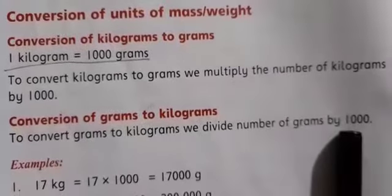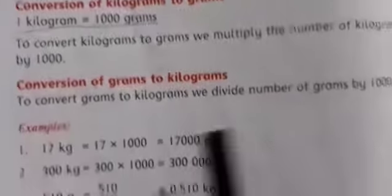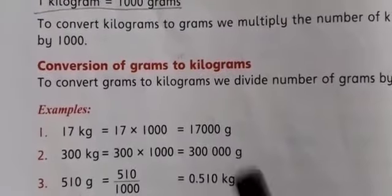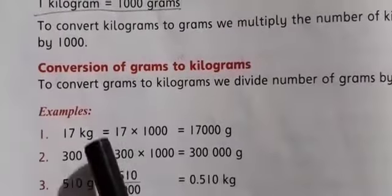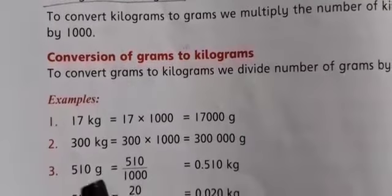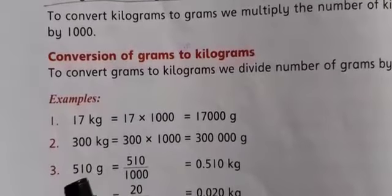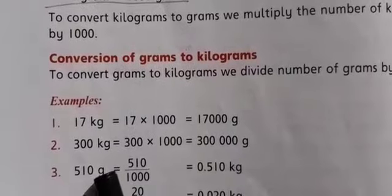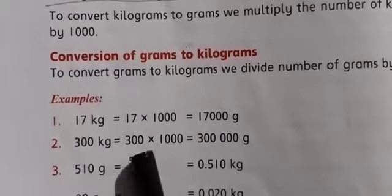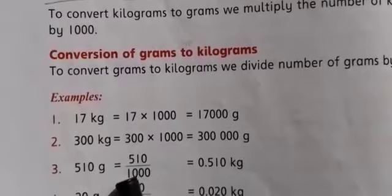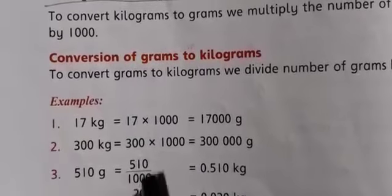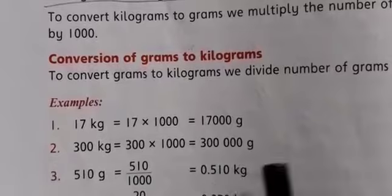Here you can see an example: 17 kg, and we have to give the answer in grams. So 17 multiplied by one thousand equals 17,000 grams. Here you can see another example: 510 grams, and we have to write it in kilograms. So we divide 510 by one thousand. One becomes a decimal point — there are three digits in the numerator and three zeros — giving us 0.510 kg.